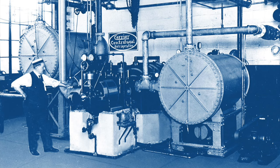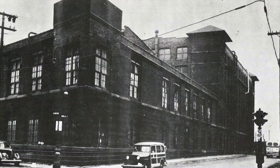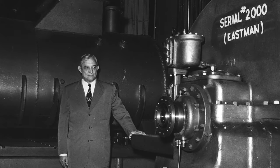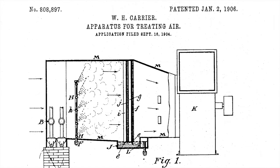It was designed to solve a humidity problem at a lithographing and publishing company located in Brooklyn, New York. Paper stock at this plant would sometimes absorb moisture from the warm summer air, making it difficult to apply ink to the paper. Willis Carrier treated the air inside the building by blowing it across chilled pipes. The air cooled as it passed across those cold pipes, and since cool air can't carry as much moisture as warm air, the process ended up reducing the humidity in the plant and stabilized the moisture content of the paper.